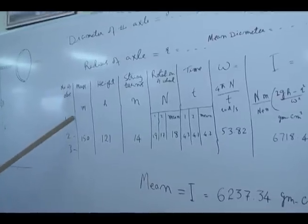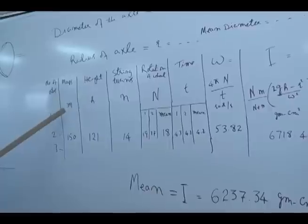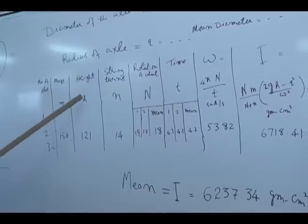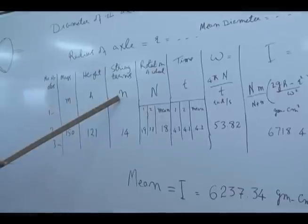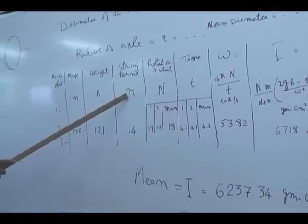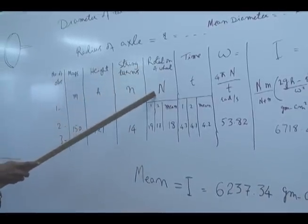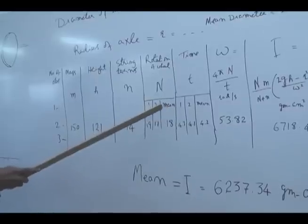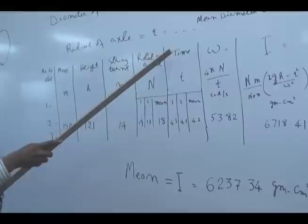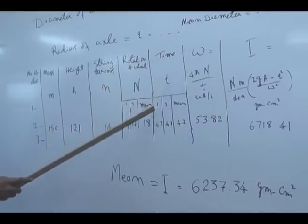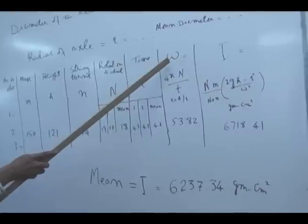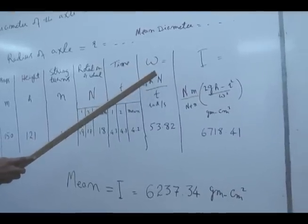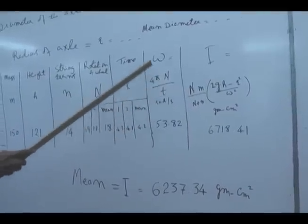Then number of observations, mass m, height h, string turns n small. Rotation of the wheel capital N, definitely mean value. Time taken by the rotations small t, mean value. Then we will apply formula omega is equal to 4 pi capital N over T. We get the value of omega.